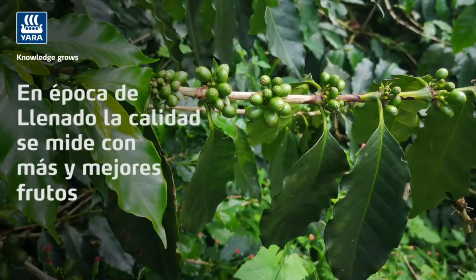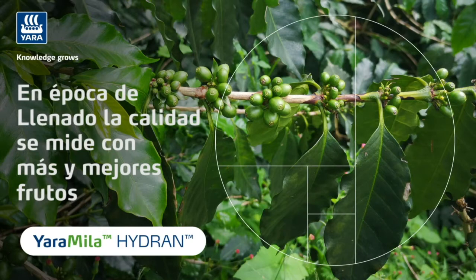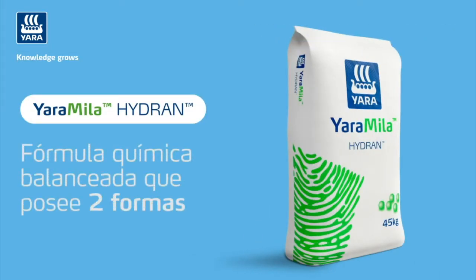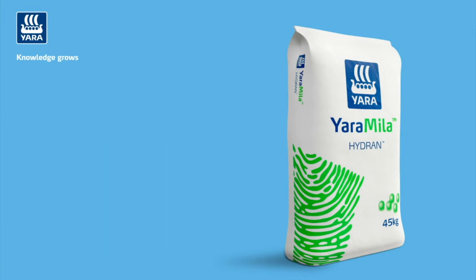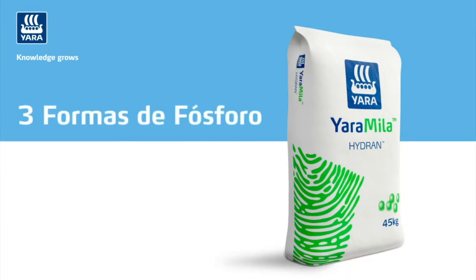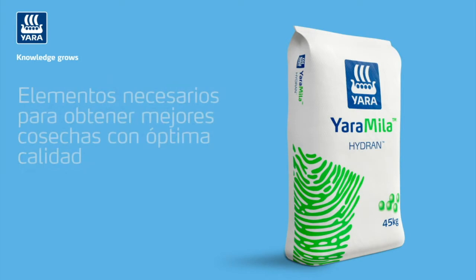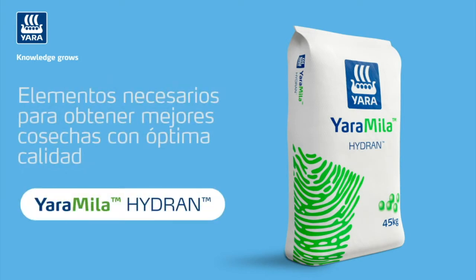Yara, Mila y Dan: siete nutrientes en el mismo gránulo. Fertilizante completo y equilibrado que aporta en su cafetal dos formas de nitrógeno y tres formas de fósforo, más un alto contenido de potasio en balance con magnesio, azufre, boro y zinc. Mejora el crecimiento de los granos al mismo tiempo que forman nuevos tejidos que van a albergar los próximos nudos productivos. Plantas más fuertes y vigorosas, mejor desarrollo del follaje y los frutos con Yara, Mila y Dan.